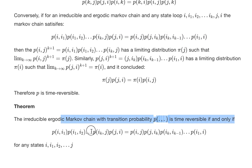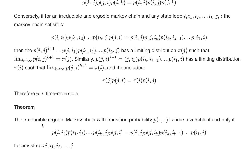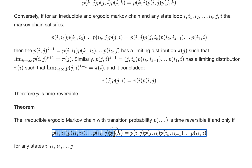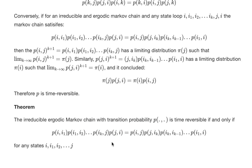To conclude: for any irreducible, ergodic Markov chain with stationary distribution π and transition probability p, the chain is time-reversible if and only if the clockwise transition probability around any state loop equals the counterclockwise transition probability, for any sequence of states i, i+1, i+2, and so on. If that condition is satisfied for every possible state loop, the Markov chain is time-reversible. That's what I wanted to cover today on time-reversible Markov chains.